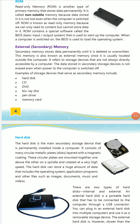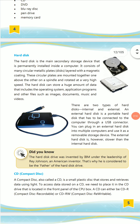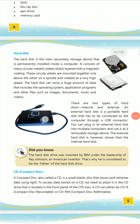Now we come to external or secondary memory. There are many types of secondary memory devices, such as hard disk, CD, DVD, pen drive, memory card, and so on. With external memory, we can store data properly and carry it from one place to another. A hard disk can be internal, placed inside the CPU box, or external — a portable hard disk that connects via a USB port.